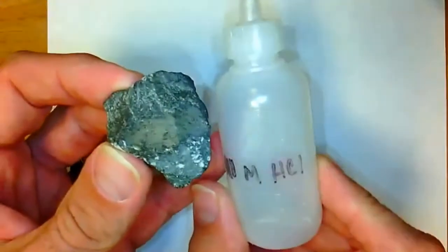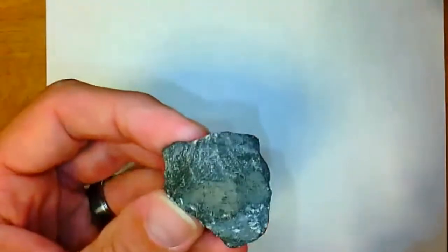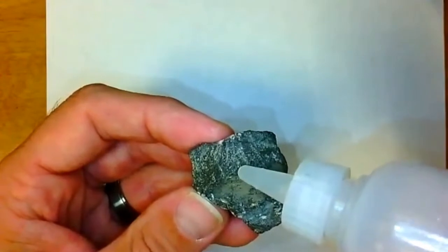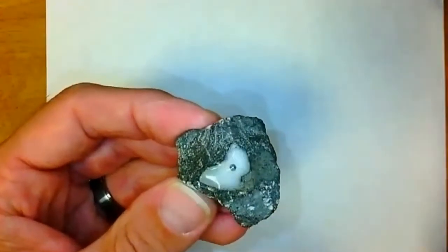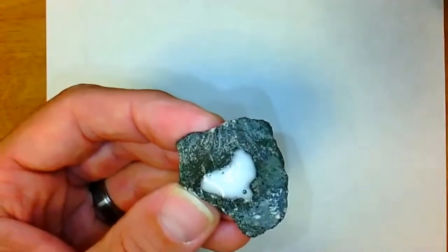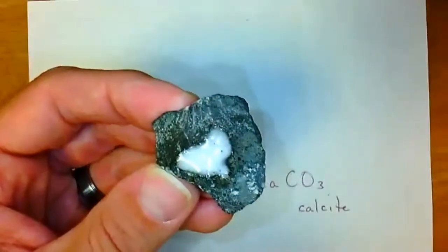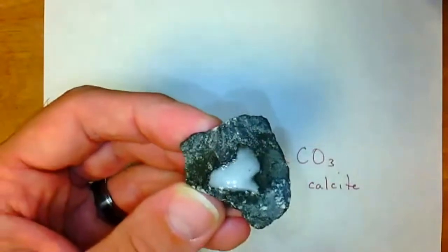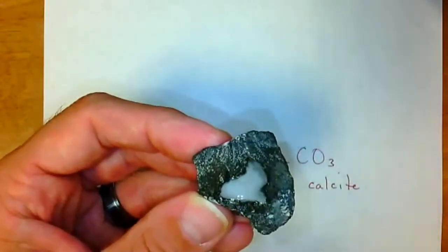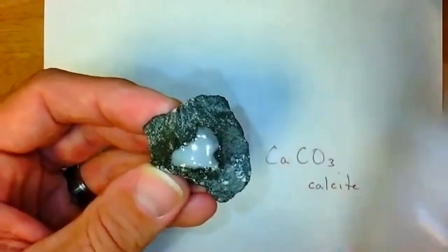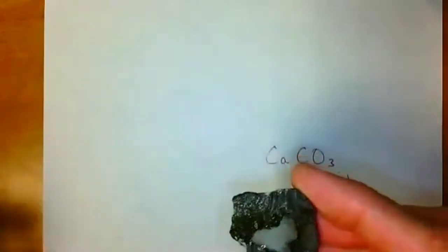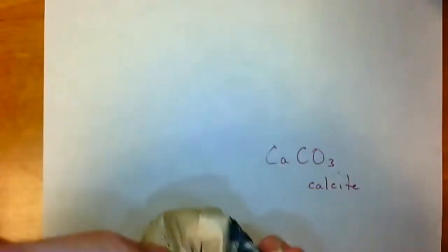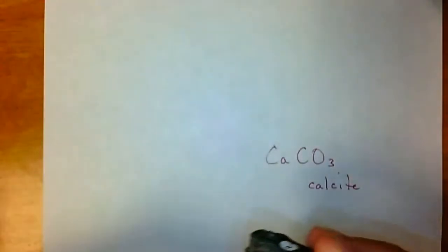Testing sample zero with dilute hydrochloric acid — HCl reacts with calcium carbonate (CaCO3), the mineral calcite, and it fizzes. This is a great indicator that this rock is made of calcite. There's one main type of rock mainly made of calcite — sample zero.